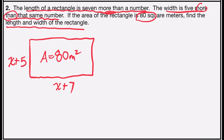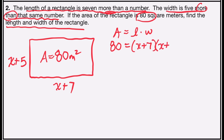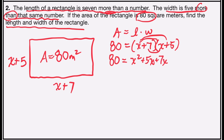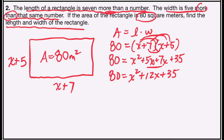Now I'll set up my equation. Area equals length times width, so 80 equals (x plus 7) times (x plus 5). I need to use FOIL on the right side: x times x is x squared, x times 5 is 5x, 7 times x is 7x, and 7 times 5 is 35. Simplifying, 80 equals x squared plus 12x plus 35. Since this is a quadratic, I subtract 80 from both sides: 0 equals x squared plus 12x minus 45.